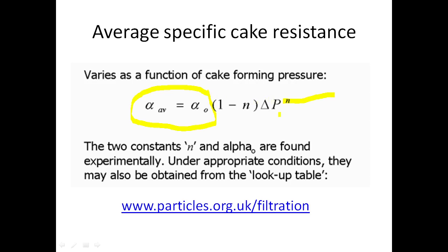The delta P here should really be delta P_c because it's the pressure drop over the cake rather than the total pressure drop. There are lookup tables on the website for common materials, so you might find your material or something similar, and find the values needed for the constitutive equation — the values of alpha naught and n. That's available in the subdirectory filtration on that website, worth checking if your material is compressible and you're stuck for values.